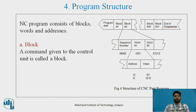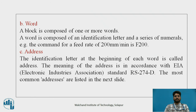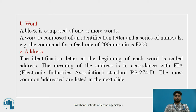First, a block is a command given to the control unit. A block is composed of one or more words. A word is composed of an identification letter and a series of numerals. For example, the command for feed rate 200 mm per minute is given as F200. Third is address — the identification letter at the beginning of each word is called an address. The meaning of the address is in accordance with EIA standards RS274D. The most common addresses are listed in the next slide.